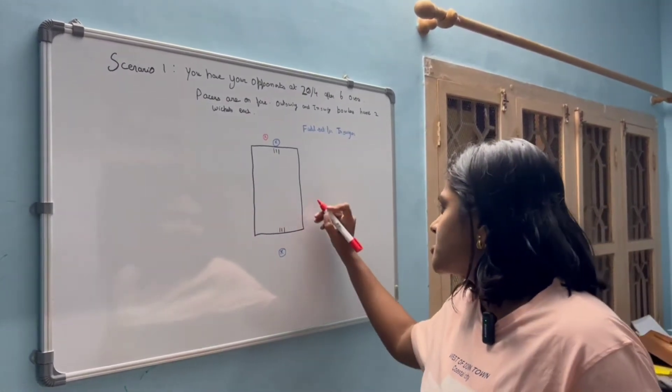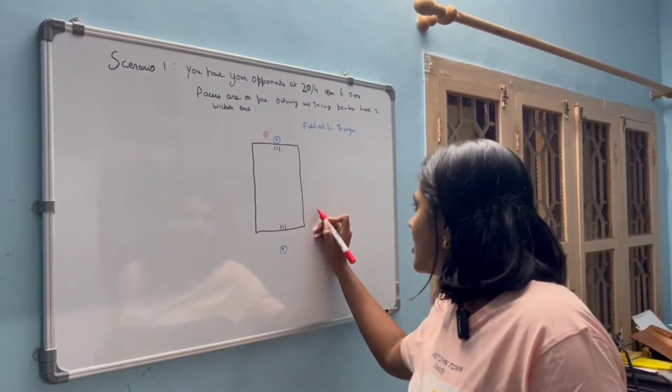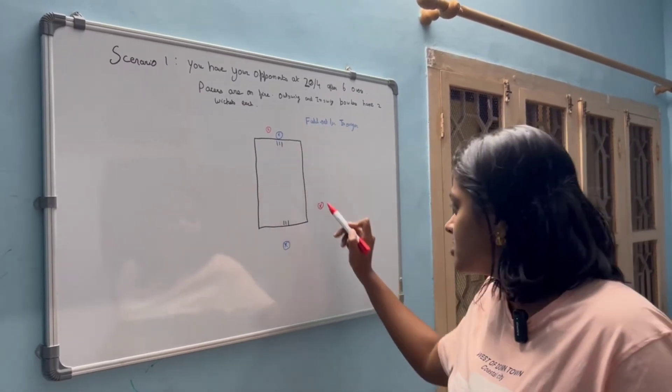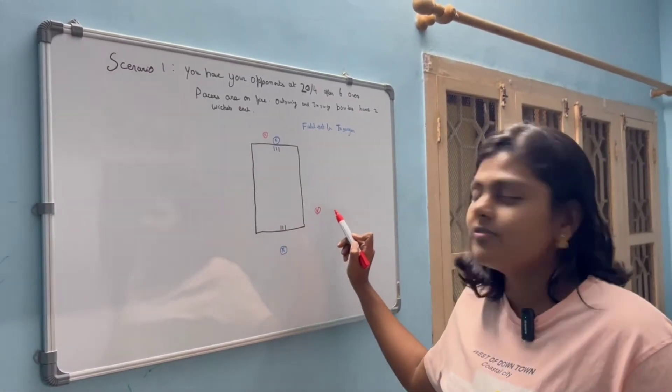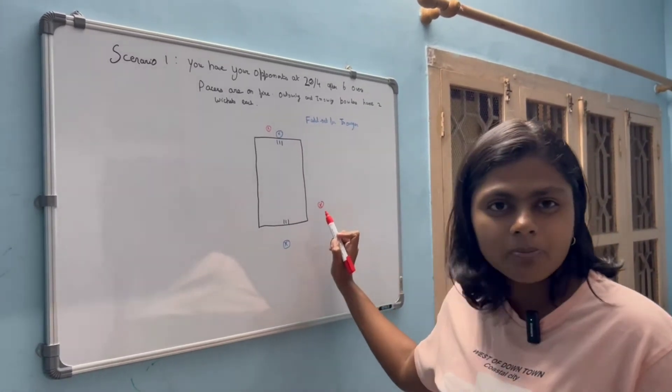So the next catching position, since the ball is moving into the right-hander I will have a silly mid-on rather straight so that if the batter tries to play an on-drive in the air with the ball moving in, this fielder will come into play very often.